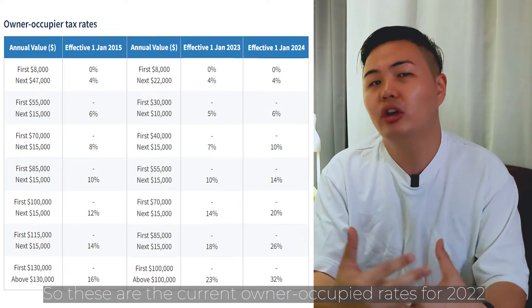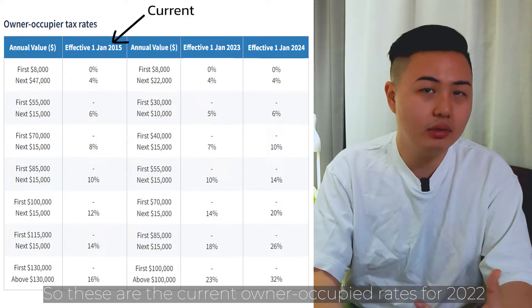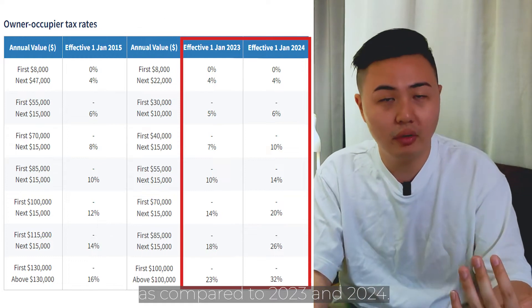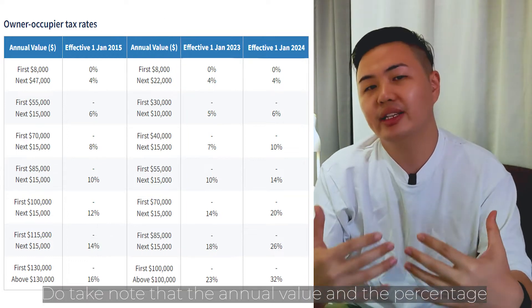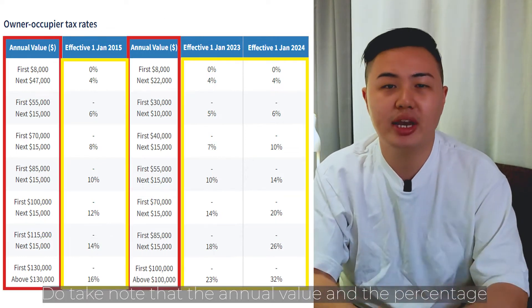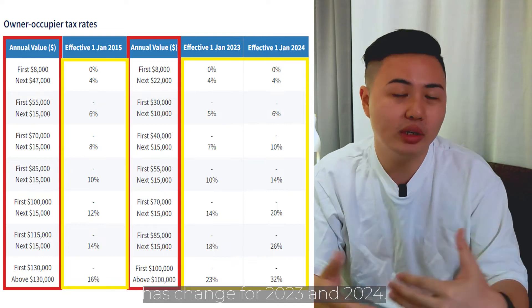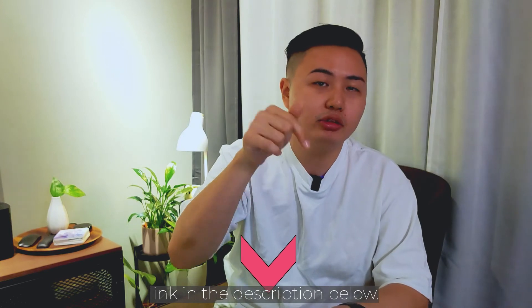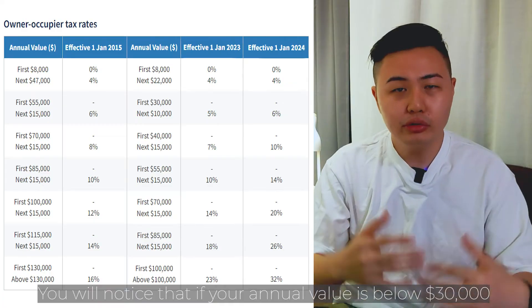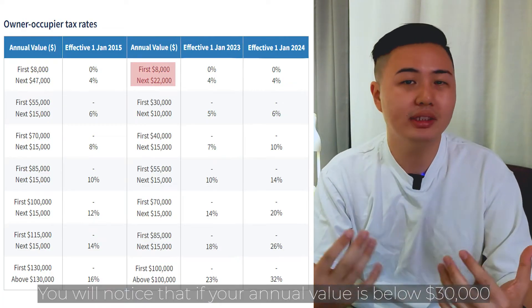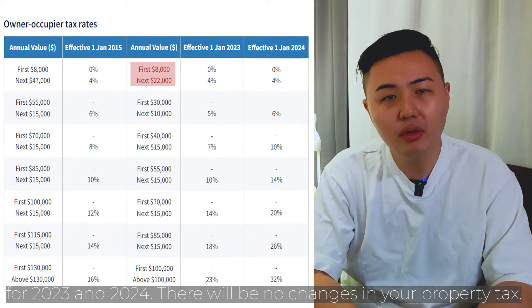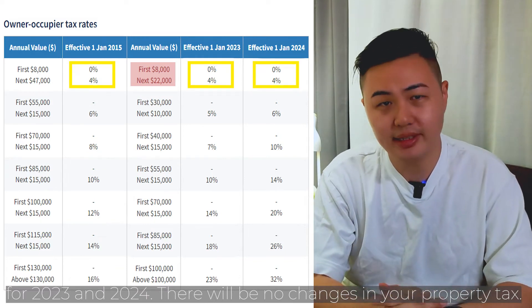These are the current owner-occupied rates for 2022 as compared to 2023 and 2024. Take note that the annual value bands and the percentages have changed for 2023 and 2024. All of these can be found on the IRAS website — link in the description below. You'll notice that if your annual value is below $30,000, for 2023 and 2024 there'll be no changes in your property tax.